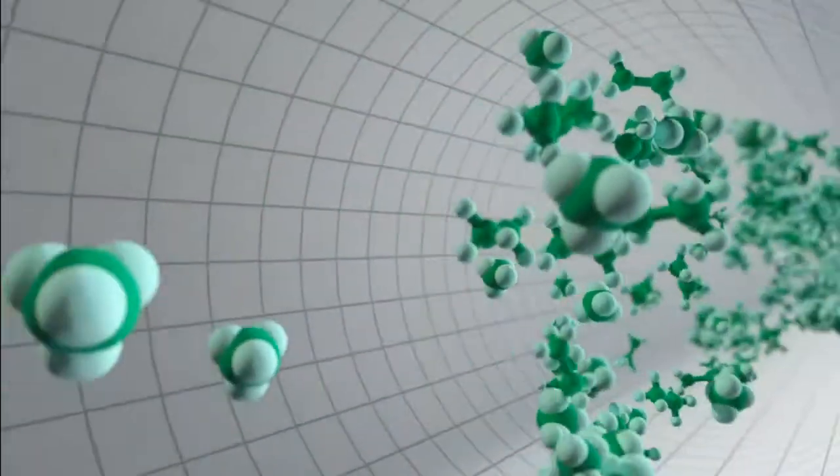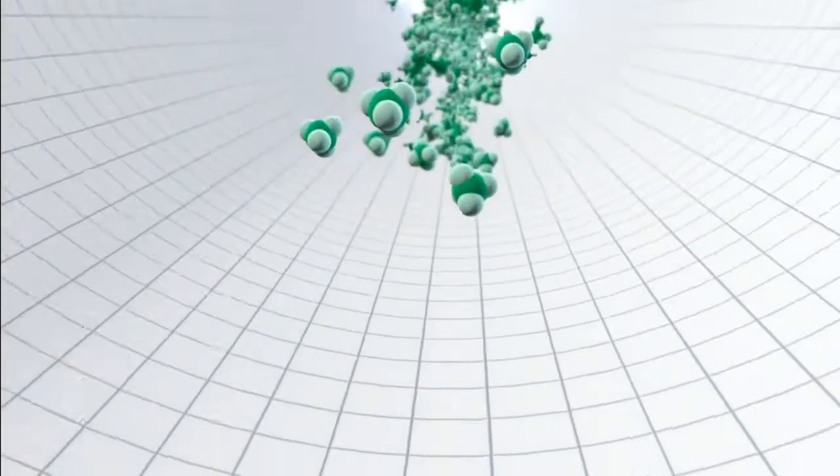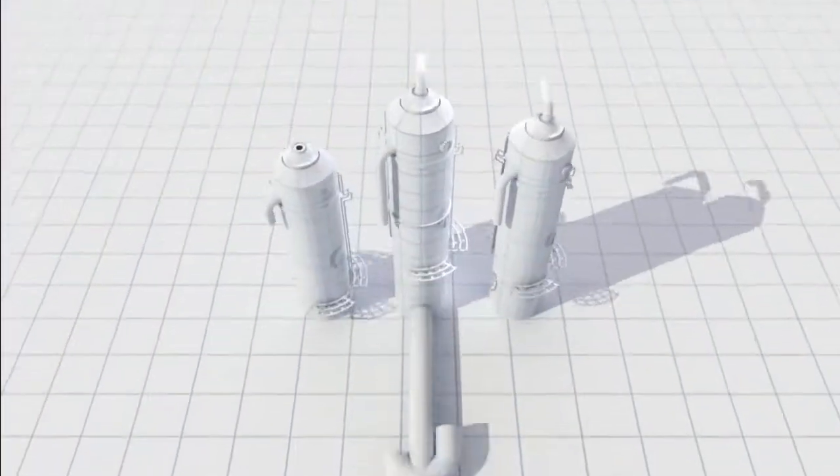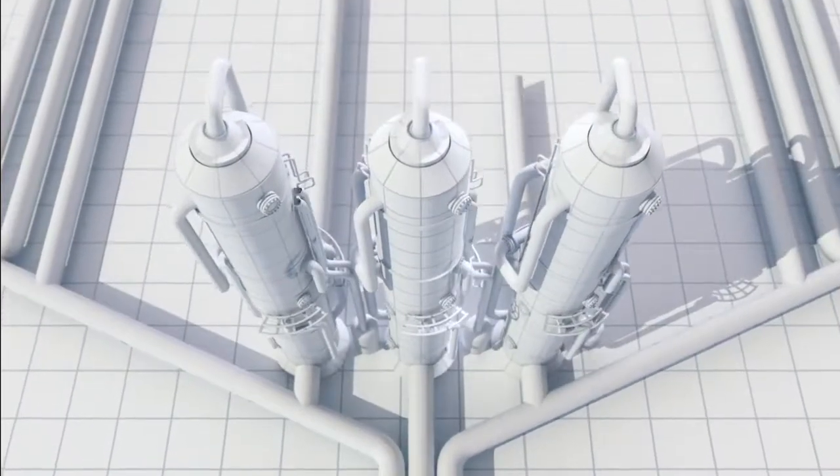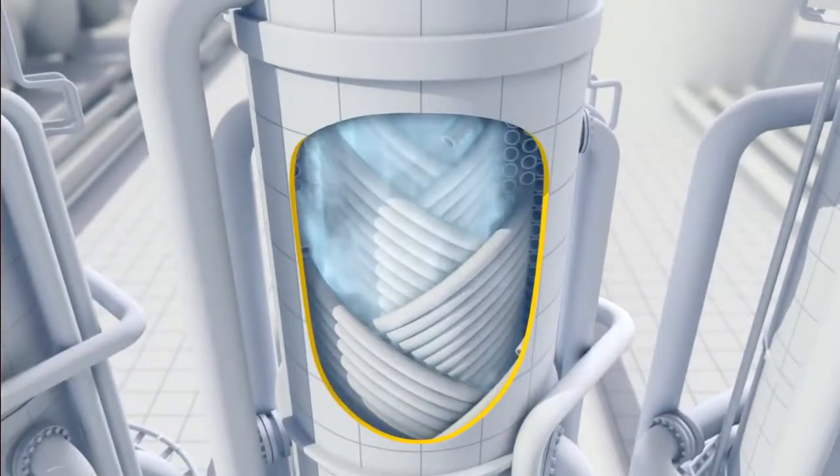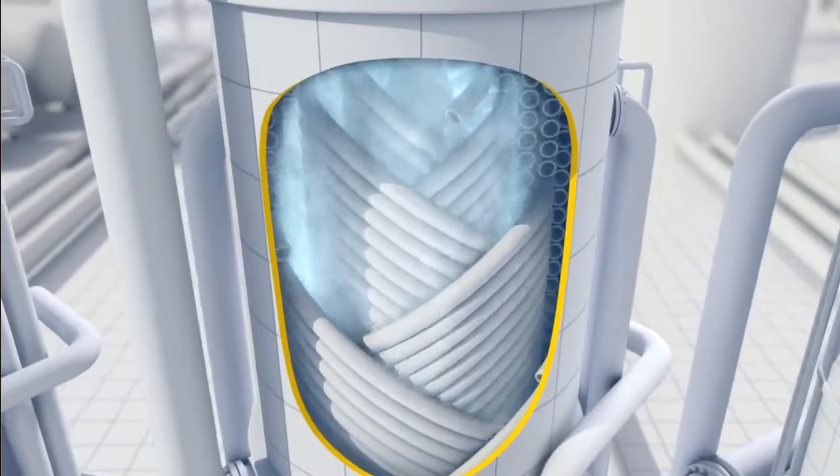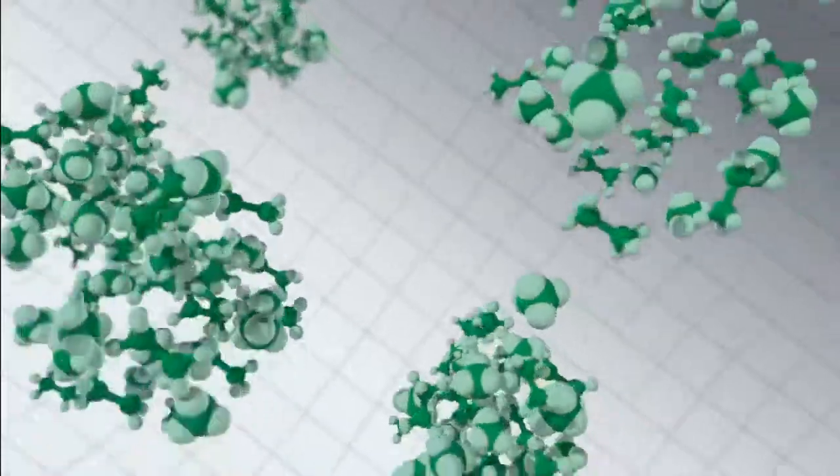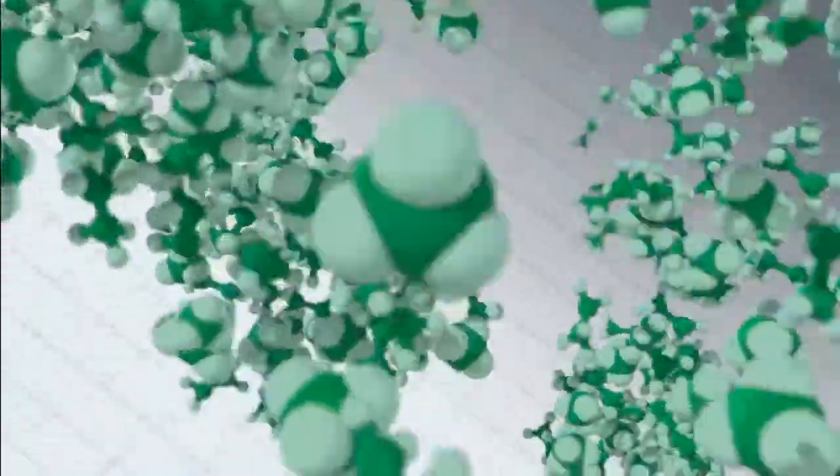Now the purified natural gas, methane with some ethane, is ready to be liquefied. This happens in heat exchangers. A coolant, chilled by giant refrigerators, absorbs the heat from the natural gas. It cools the gas to minus 162 degrees centigrade, shrinking its volume by 600 times.